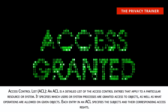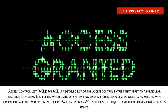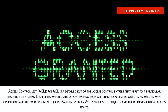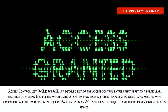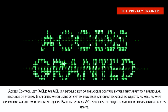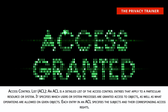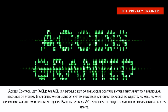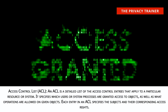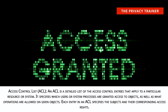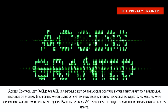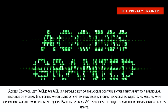Access Control List, ACL. An ACL is a detailed list of the Access Control Entries that apply to a particular resource or system. It specifies which users or system processors are granted access to objects, as well as what operations are allowed on given objects. Each entry in an ACL specifies the subjects and the corresponding access rights.